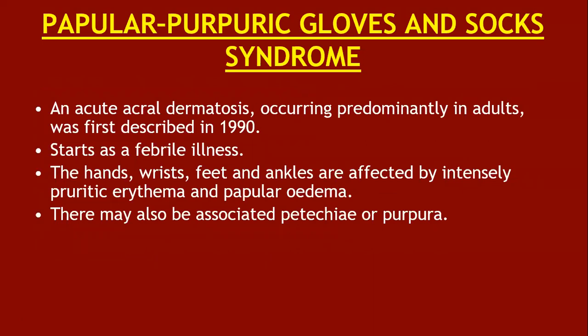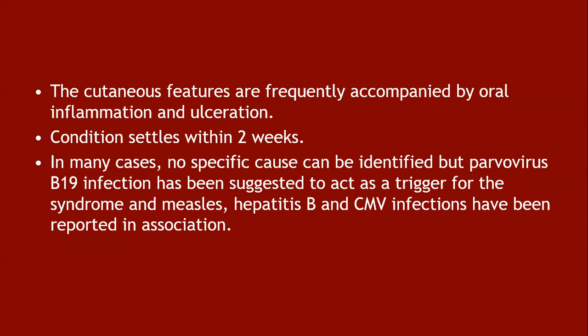Papular purpuric glove and sock syndrome is an acute acral dermatosis occurring predominantly in adults, first described in 1990. It starts with febrile illness; hands, wrists, feet, and ankles are affected by intensely pruritic erythema and papular edema. There may also be associated fatigue or purpura, and cutaneous features are frequently accompanied by oral inflammation and ulceration. The condition settles in two weeks. In many cases no specific cause is identified, but parvovirus B19 infection has been suggested as a trigger; measles, hepatitis B, and cytomegalovirus infection have also been reported in association.